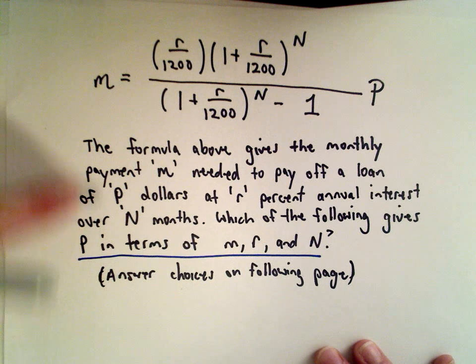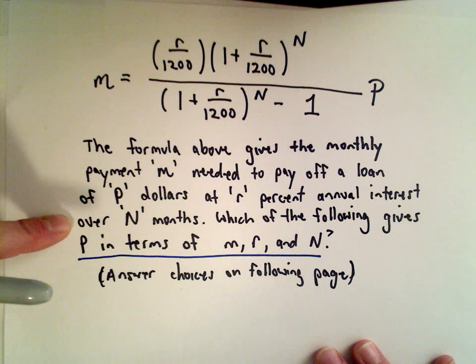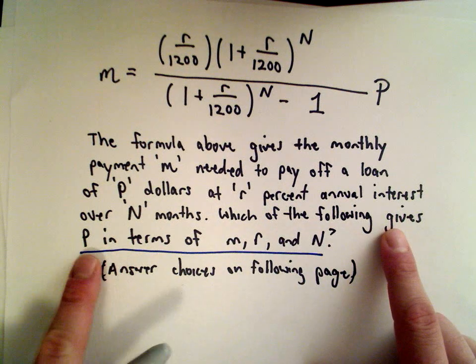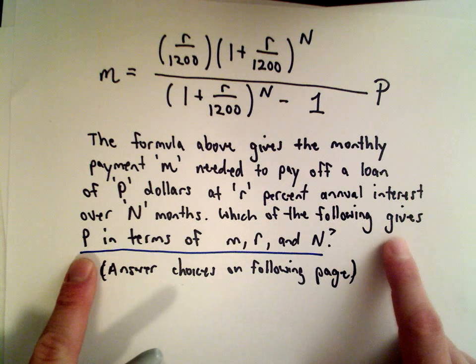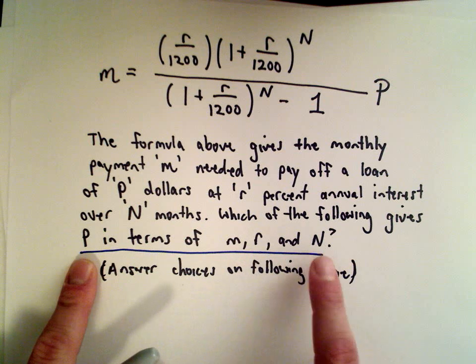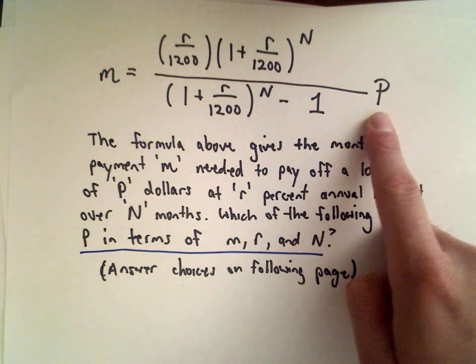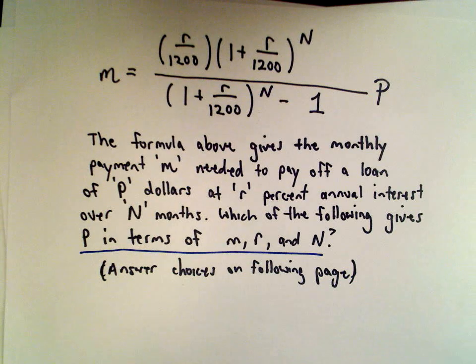They give you some context. This has to do with a loan payment formula. The important part says which of the following gives, the question is which of the following gives P in terms of M, R, and N. So again, what that means is it says we want P isolated. We want some equation that says P equals something.